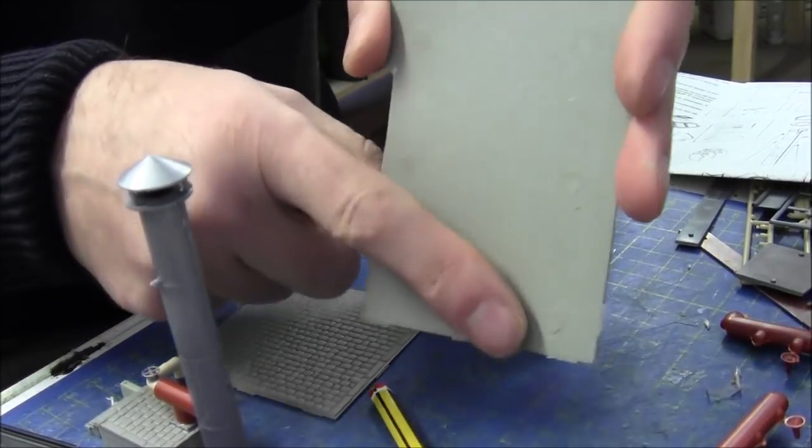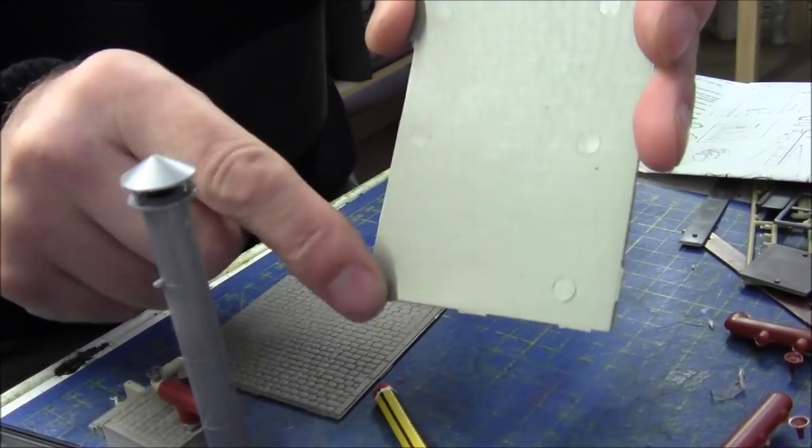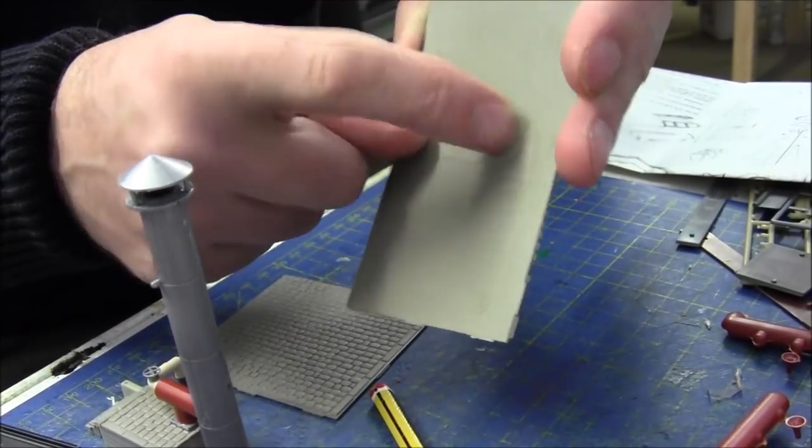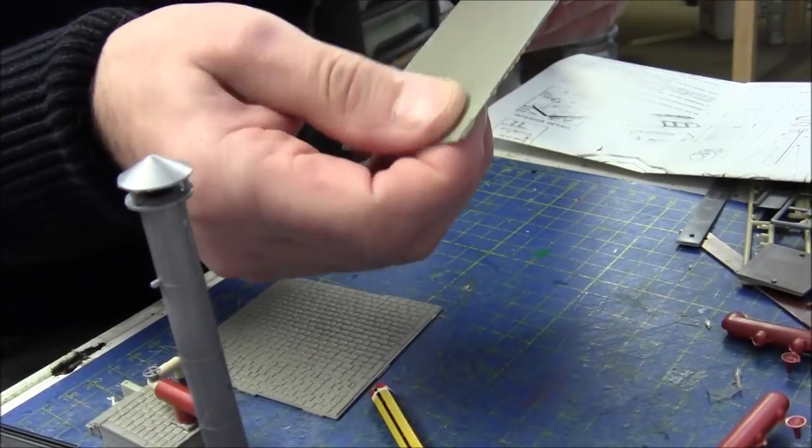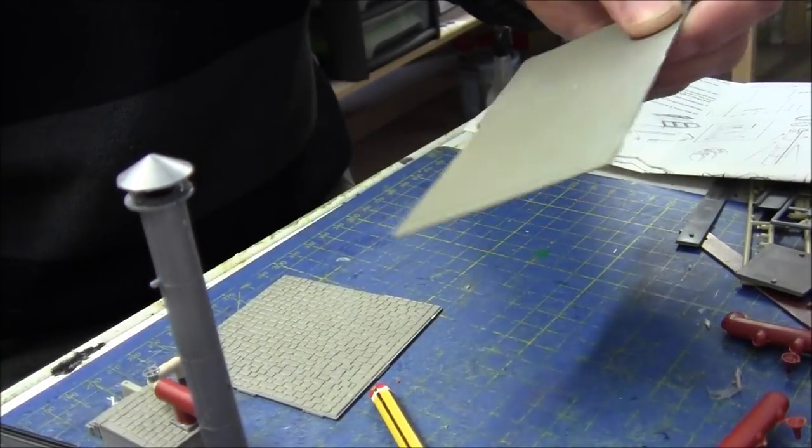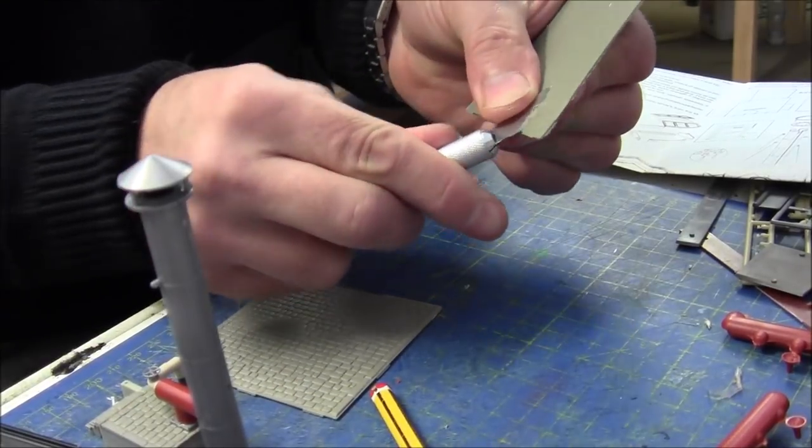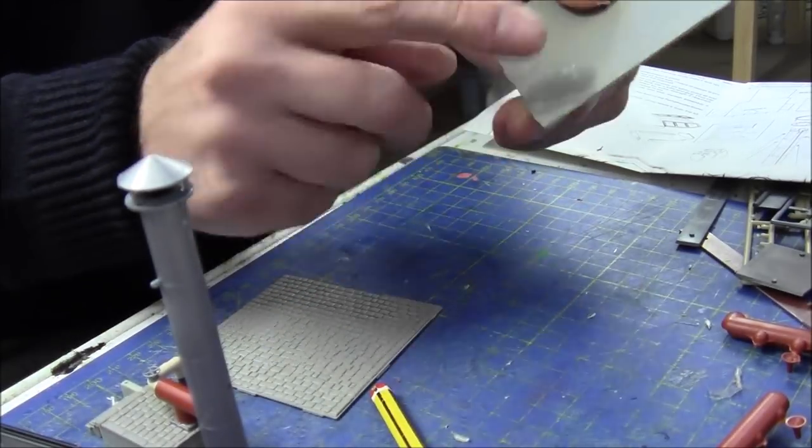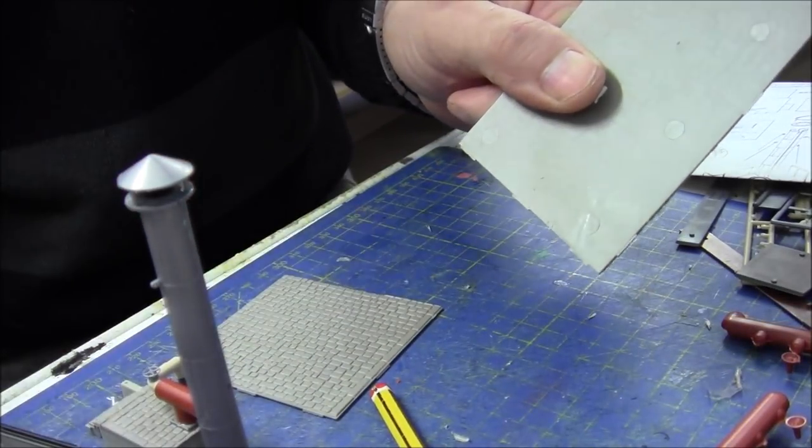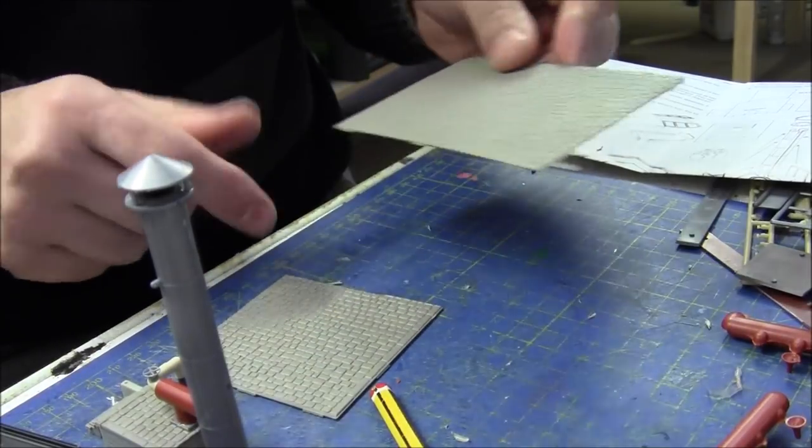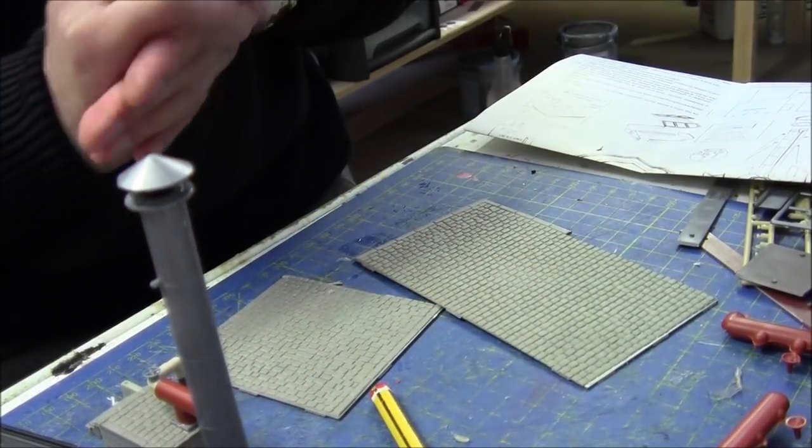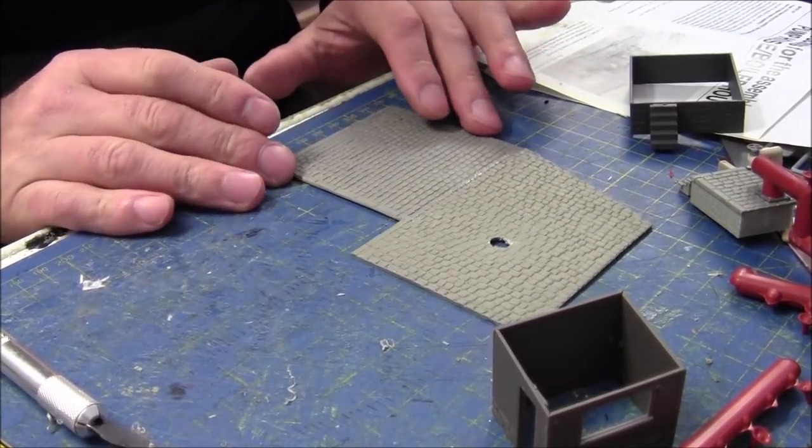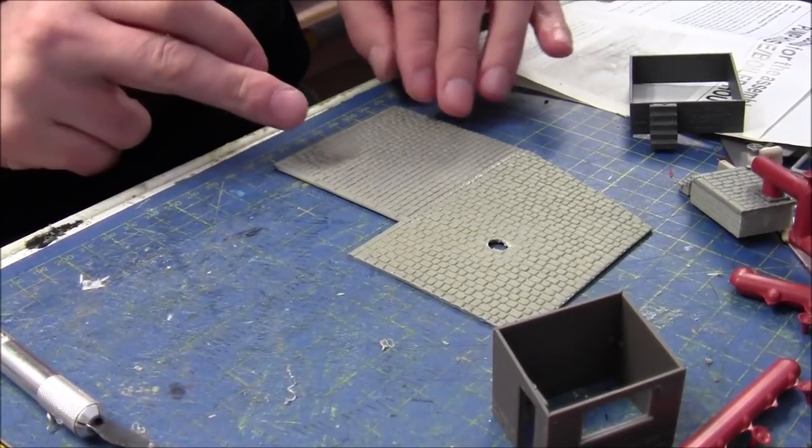On the back you've got these nipples protruding which will keep it off the surface, so they'll have to be taken off as well. I'll clean up these edges, glue it together, and we'll see where we go from there.